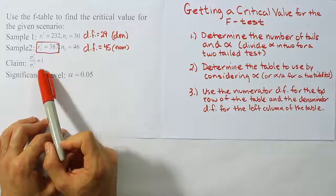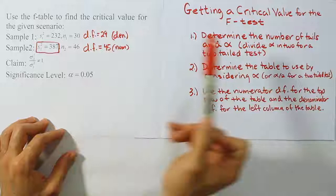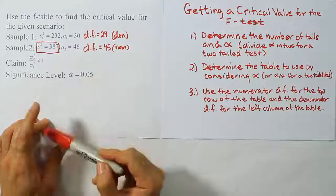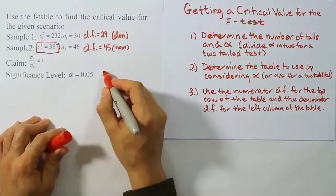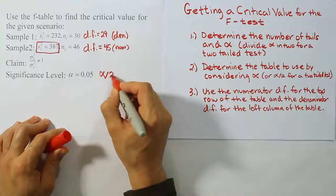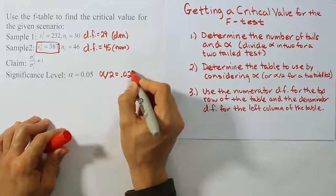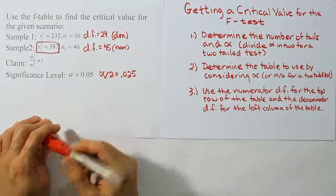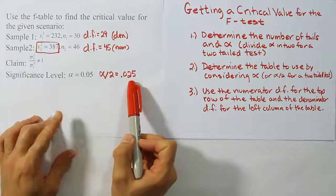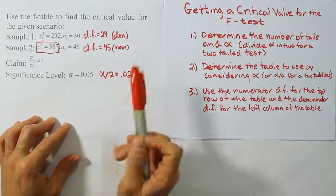And because it's two-tailed, we're going to take this alpha and we're going to divide it in two. And so we're going to actually use alpha divided by two for the problem. Then alpha divided by two will be 0.025. So there's our alpha divided by two, which we'll go to that table now as a result.